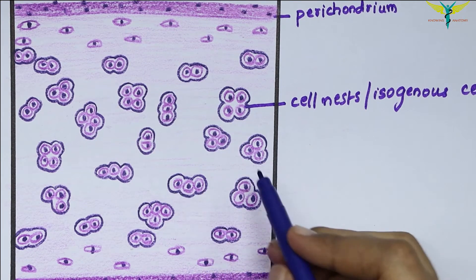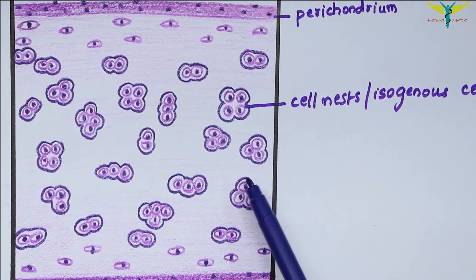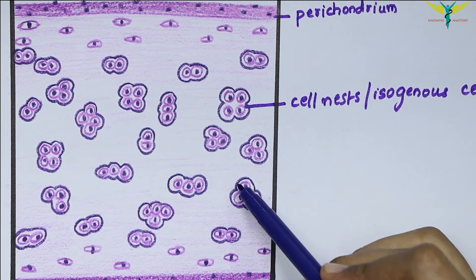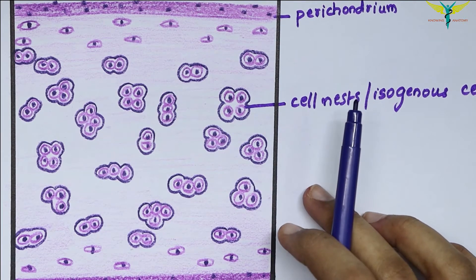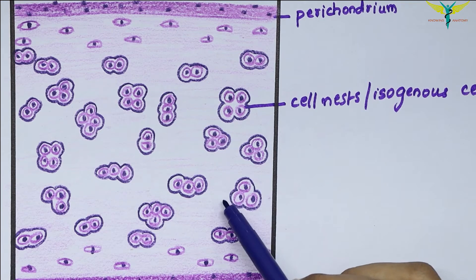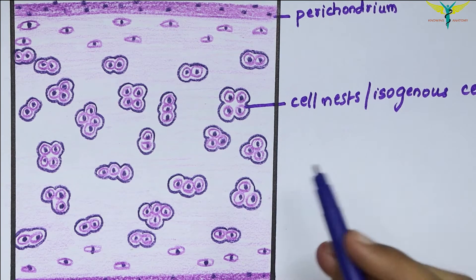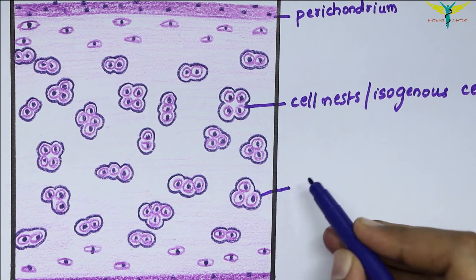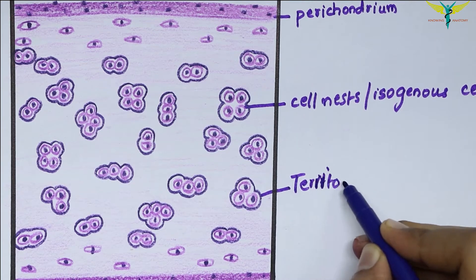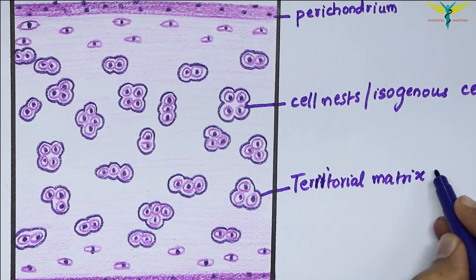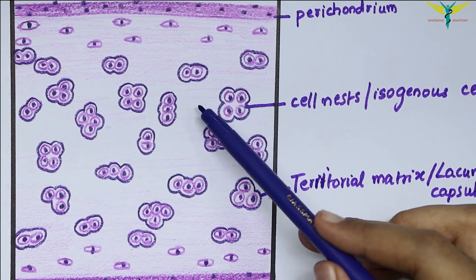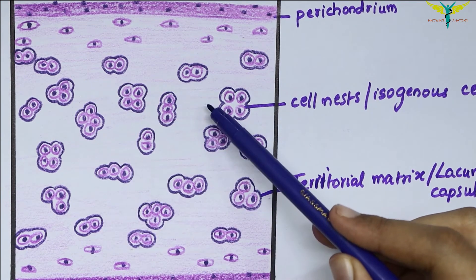This white color gap is called as the lacunae. Around the cell nest, the matrix stains deeper than the surroundings and gives an appearance of a capsule. This deep staining matrix is newly formed and is called as the territorial matrix, and it is also called as the lacunae capsule. This pale staining matrix is called as the inter-territorial matrix.